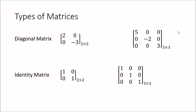The identity matrix is itself a subset of the diagonal matrix, which also makes it a subset of the square matrix. It is a square matrix with values only along the principal diagonal, and the special property is that all those diagonal values are equal to 1. The rest of the values are all zero.